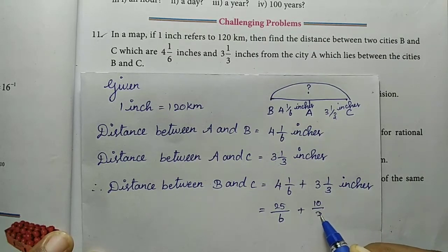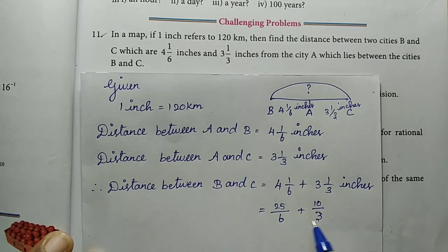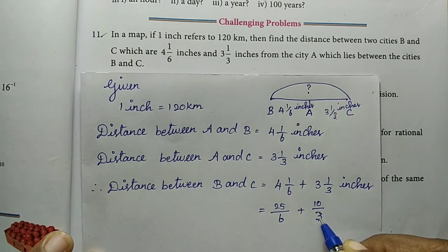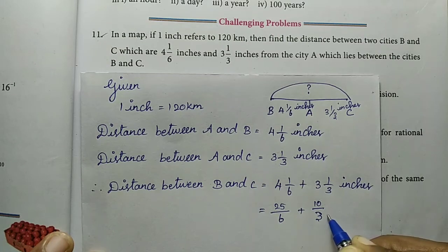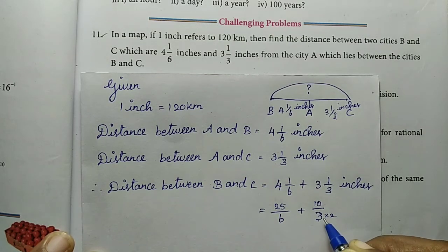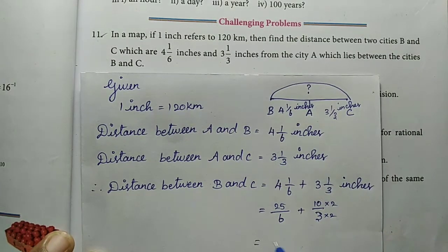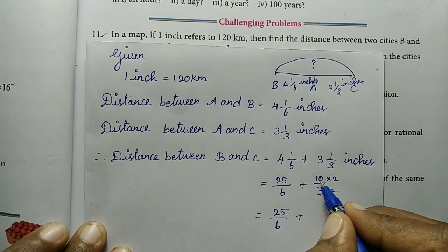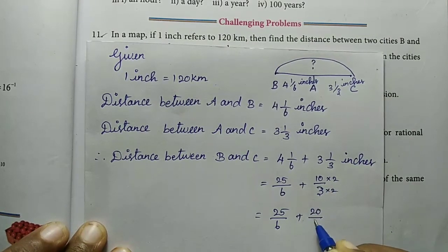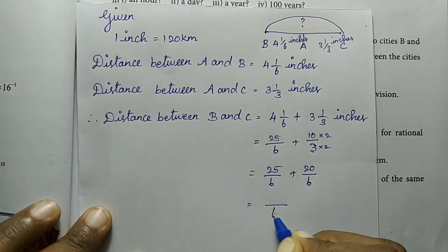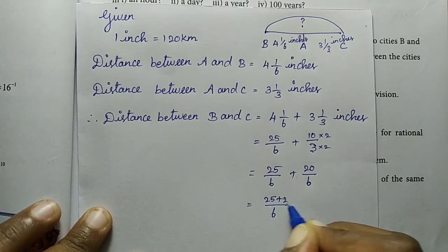To add rational numbers, the denominators must be the same. The denominators are different, so we change to a common denominator of 6. Multiply 3 by 2 to get 6. So we get 25 divided by 6 plus 10 times 2 is 20, 20 divided by 6.